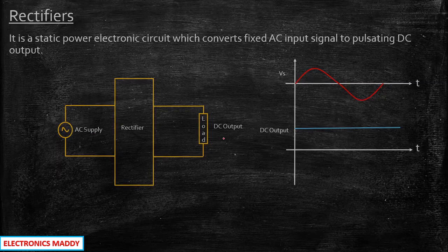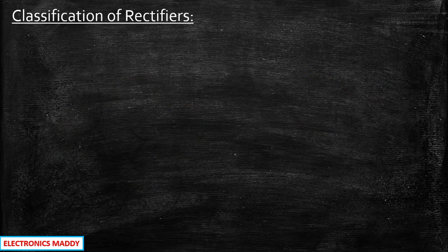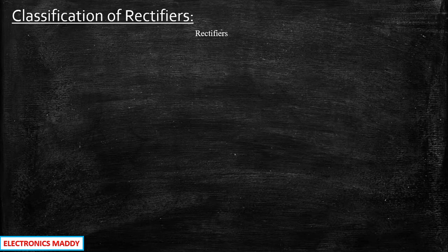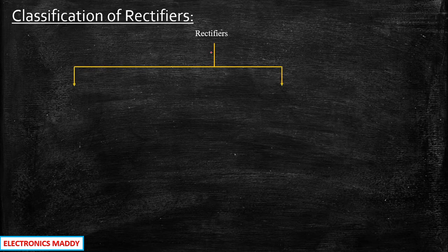Now having seen what a rectifier is, we need to understand the classification of rectifiers, because in today's world there are a lot of configurations available. Fundamentally, rectifiers are classified into controlled rectifiers and uncontrolled rectifiers.